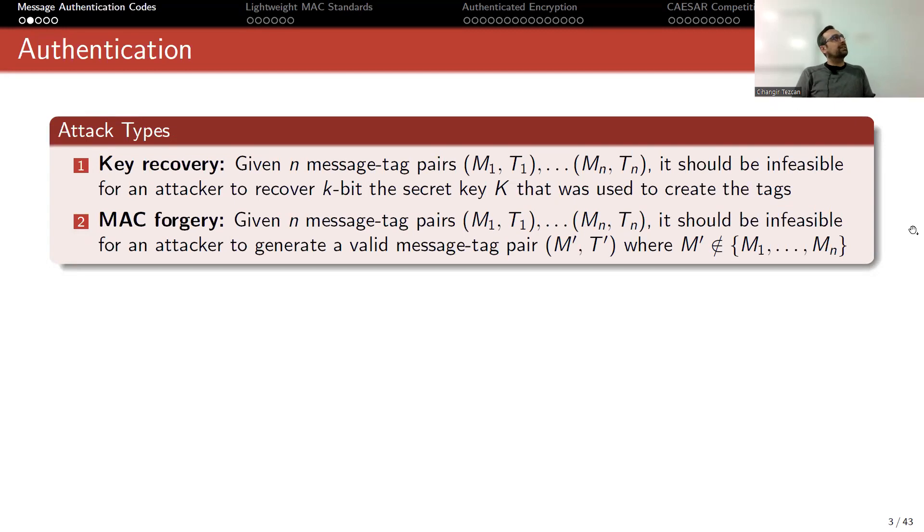There's another way to attack this system. Key recovery is one scenario, but MAC forgery is another attack type. Message authentication codes are shortened as MAC. Don't confuse it with the MACs we use in networks because that is media access control. This is completely different. In a scenario like this, you again capture message-tag pairs like M1, T1, through Mn, Tn. It should be infeasible for an attacker to generate a valid message-tag pair M prime, T prime, where M prime is not one of these messages you captured. You are forging a tag for a message that hasn't been sent before. If you can do this, we also break the system.